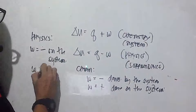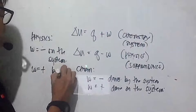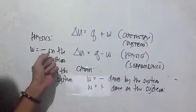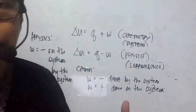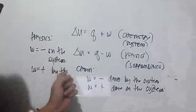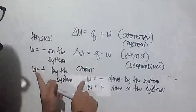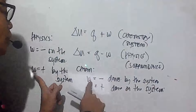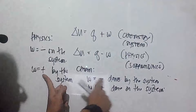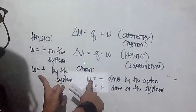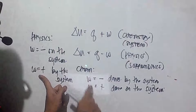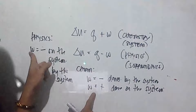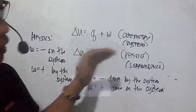So in physics, work done on the system is negative because the surroundings are losing energy. If the system does the work, the surroundings gain energy while the system loses energy. In chemistry, if work is done on the system, the system's internal energy increases; if the system does the work, the system's internal energy decreases.